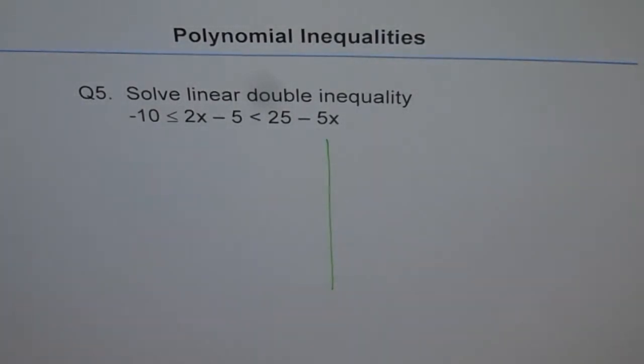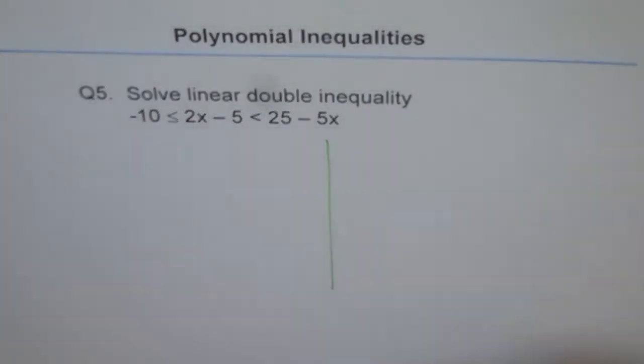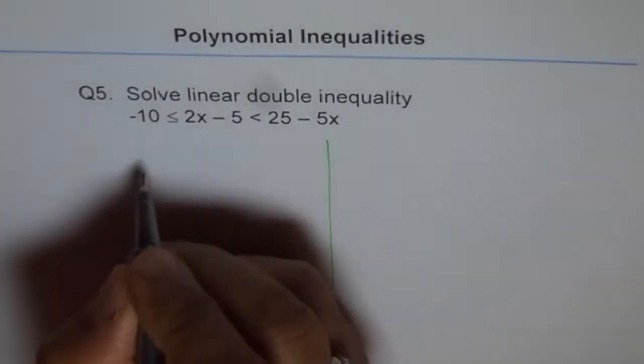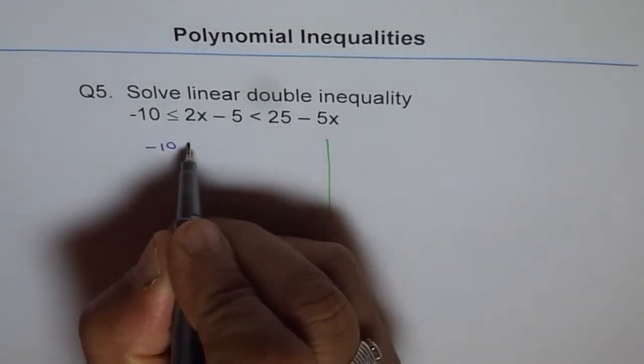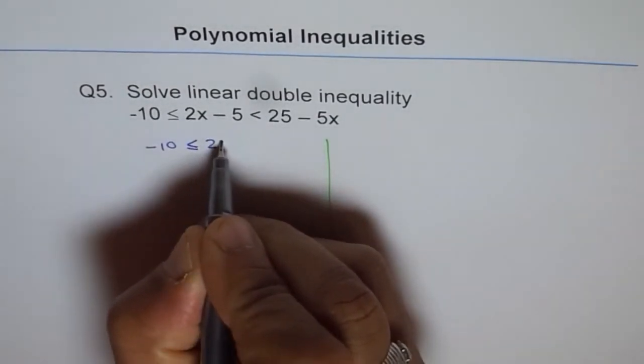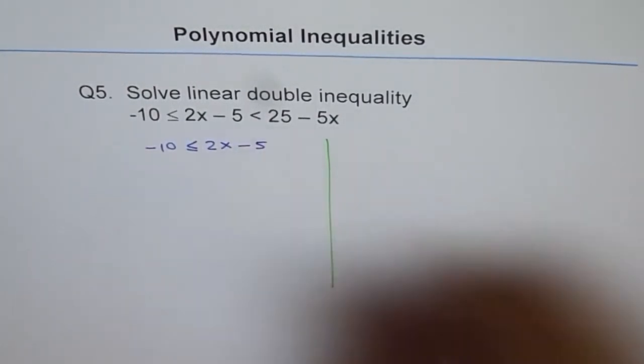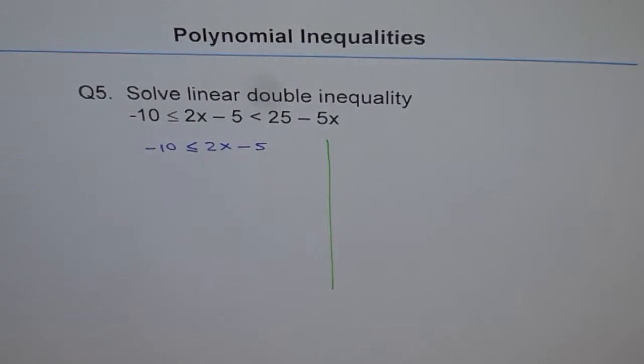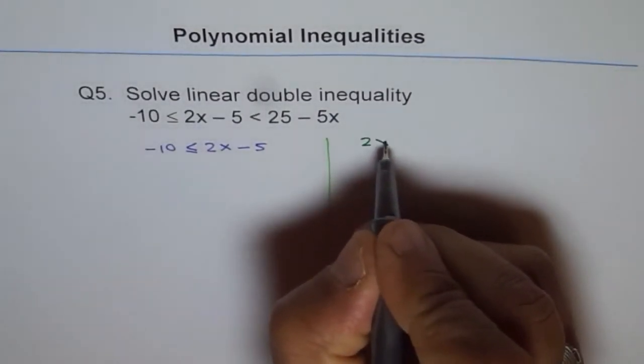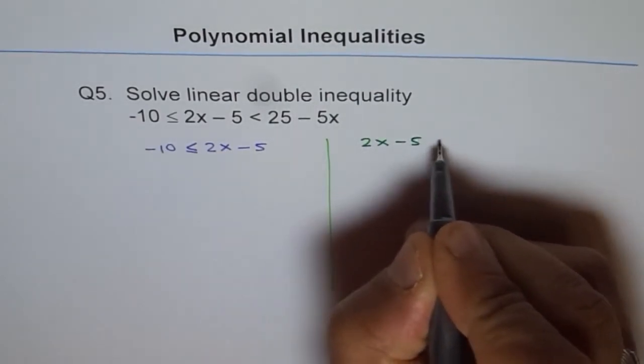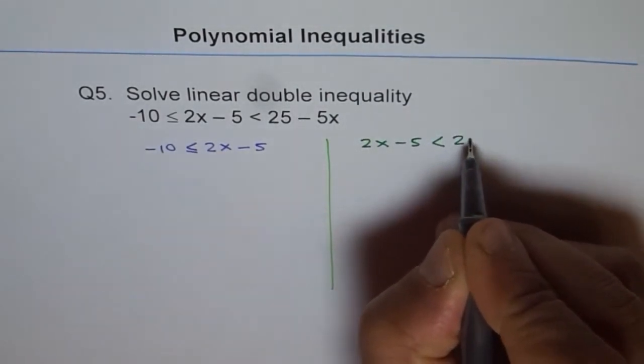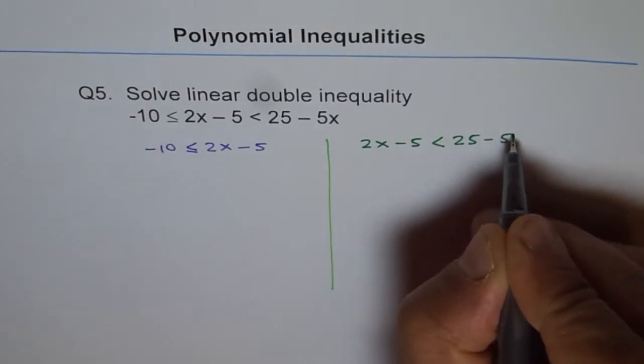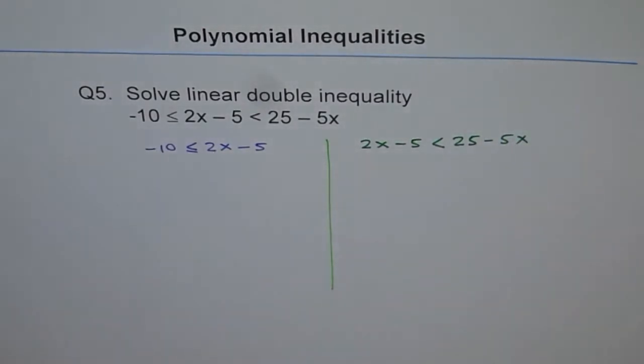So we will do one here. Let's write down one is minus 10 is less than equal to 2x minus 5. And on the other side, I will write down the other inequality, which is 2x minus 5 is less than 25 minus 5x. And let's solve that.